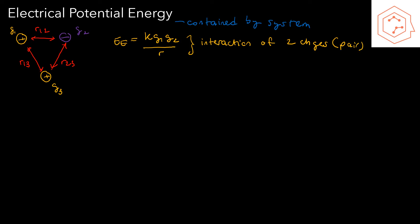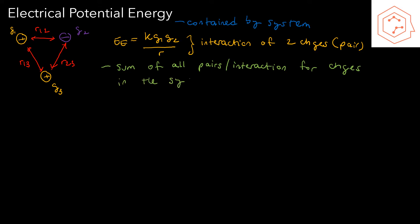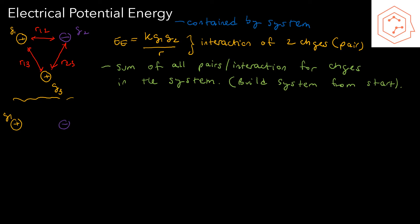To find the electrical potential energy of the entire system, we find the sum of all pairs or interactions between charges in the system. You can imagine building up the system from scratch. Start with q1, then bring q2 from infinity to its current location at distance r12 from q1. At this moment, the net electrical potential energy is kq1q2/r12.